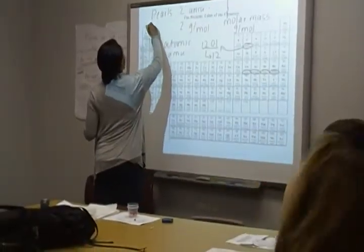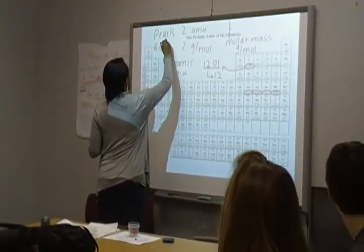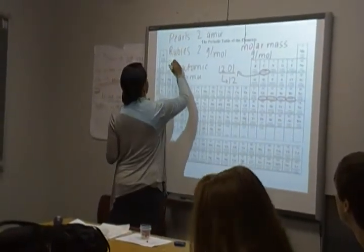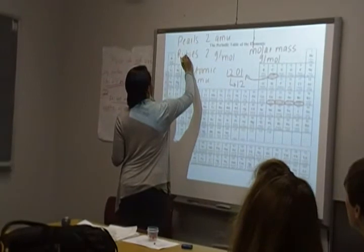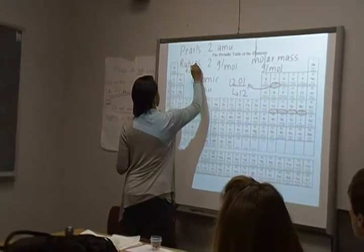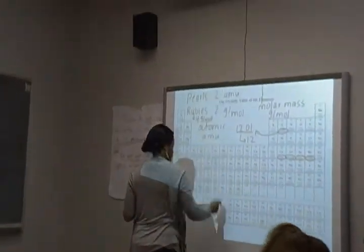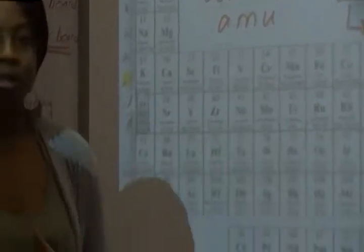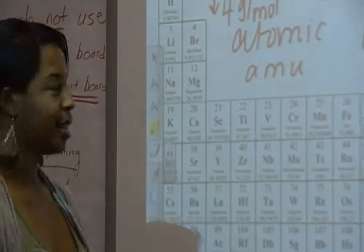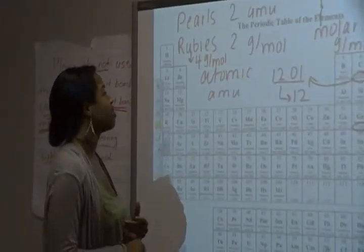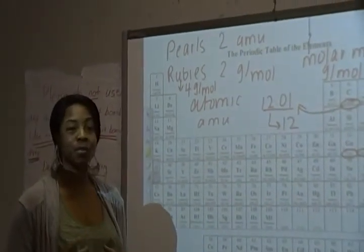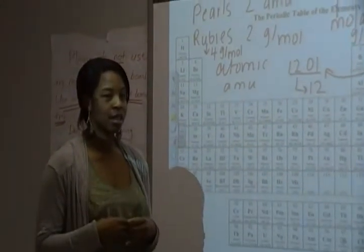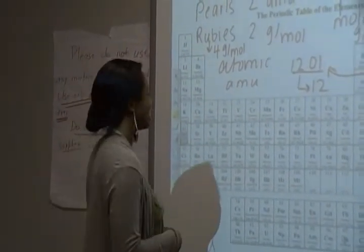So if rubies was an element as well, and if rubies' molar mass was 4 grams per mole, how many moles would it be if I gave you 8 grams? And if told that you want to make grams from moles, and you're given 2 moles, how many grams would you need?